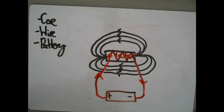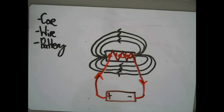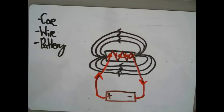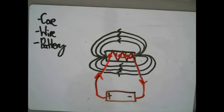So far we've looked at the three key components — the core, the wire, and the thing that provides the charge — how the charge flows around the electromagnet, and the magnetic field lines it produces. With a permanent magnet the strength is fixed, but with an electromagnet you can change the strength.